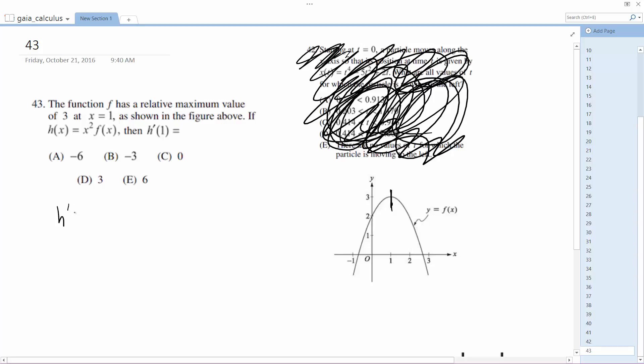So, h prime of 1 is going to be, take the derivative, so it's going to be 2x and then f of x. In this case, well, if we get 3 out for this, you plug in 3 here. So, what we end up with is 2 times, at x equals 1, this equals 3, and what we get out is 6.